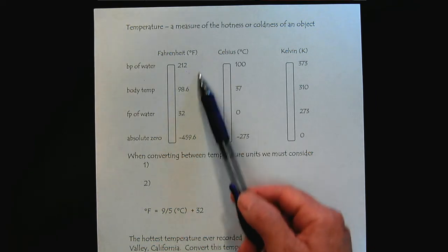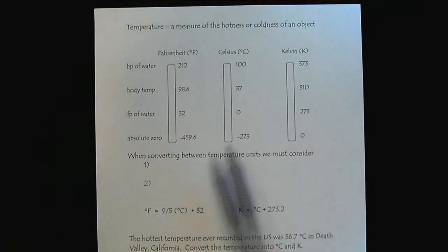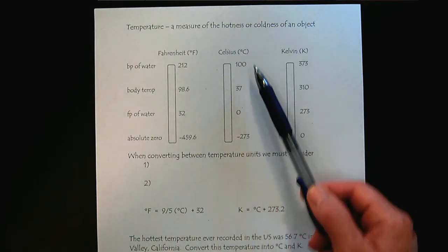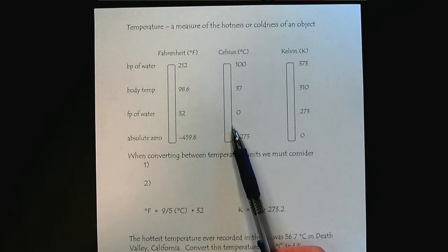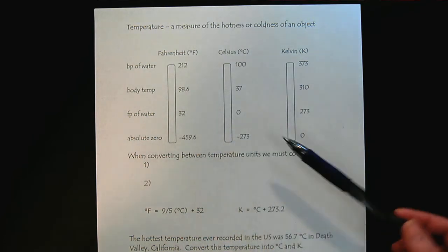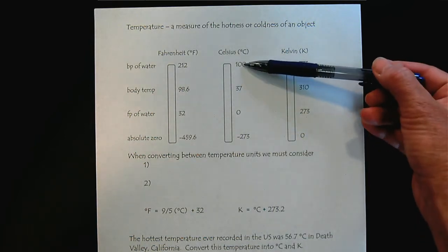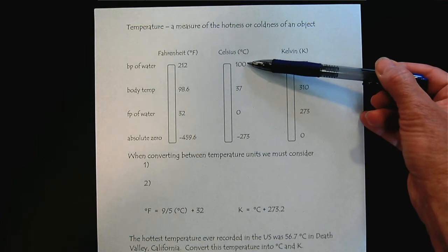This temperature scale system was eventually replaced in the scientific community with Celsius. Celsius focuses on the physical properties of water, defining zero as the freezing point of water and 100 degrees as the boiling point of water.